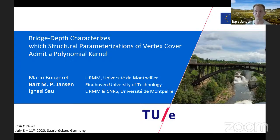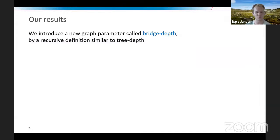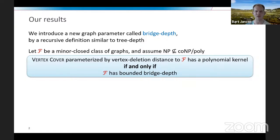The key question is: what are the most general target graph classes for which the corresponding parameterizations still yield polynomial kernels? Vertex cover has been kernelized for increasingly general classes replacing forests, where the deletion distance parameter becomes ever smaller. The paper answers this question by introducing a new graph parameter called bridge depth, which has a recursive definition similar to tree depth, but where all bridges are contracted for free.